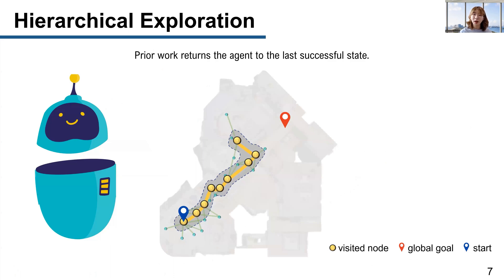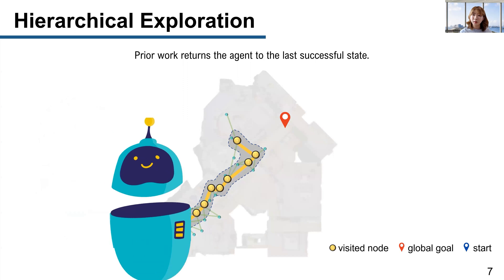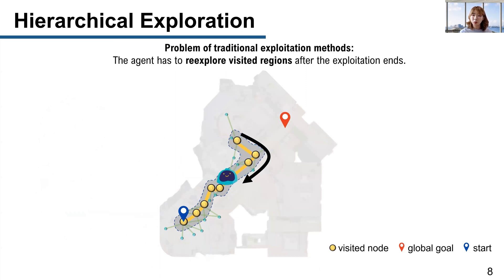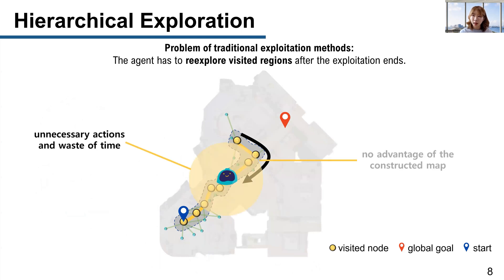Let's see how existing hierarchical navigation methods work. The agent starts from the blue point and moves upward following the yellow path. At the last action, the agent makes the wrong decision. Prior work tackles this situation by using an exploitation method called backtracking, which returns the agent to the last successful state. However, the problem of traditional exploitation methods is that the agent has to re-explore visited regions after backtracking to a previous state. This makes the agent perform unnecessary actions, and the agent does not take any advantage of the map constructed during exploration.